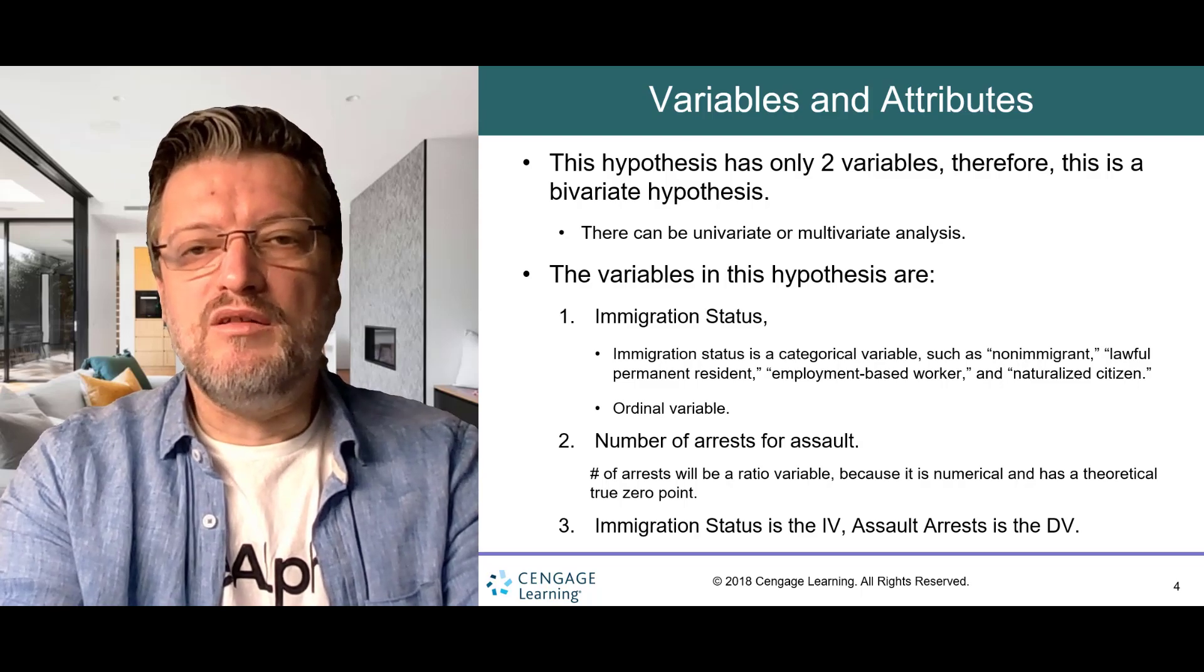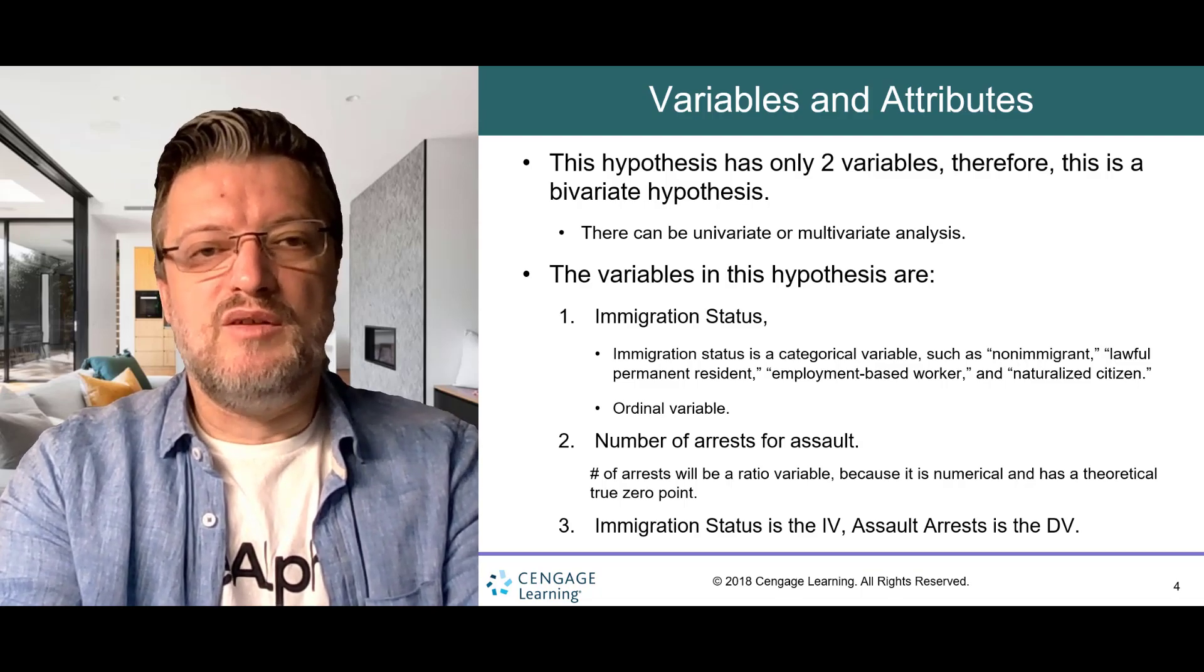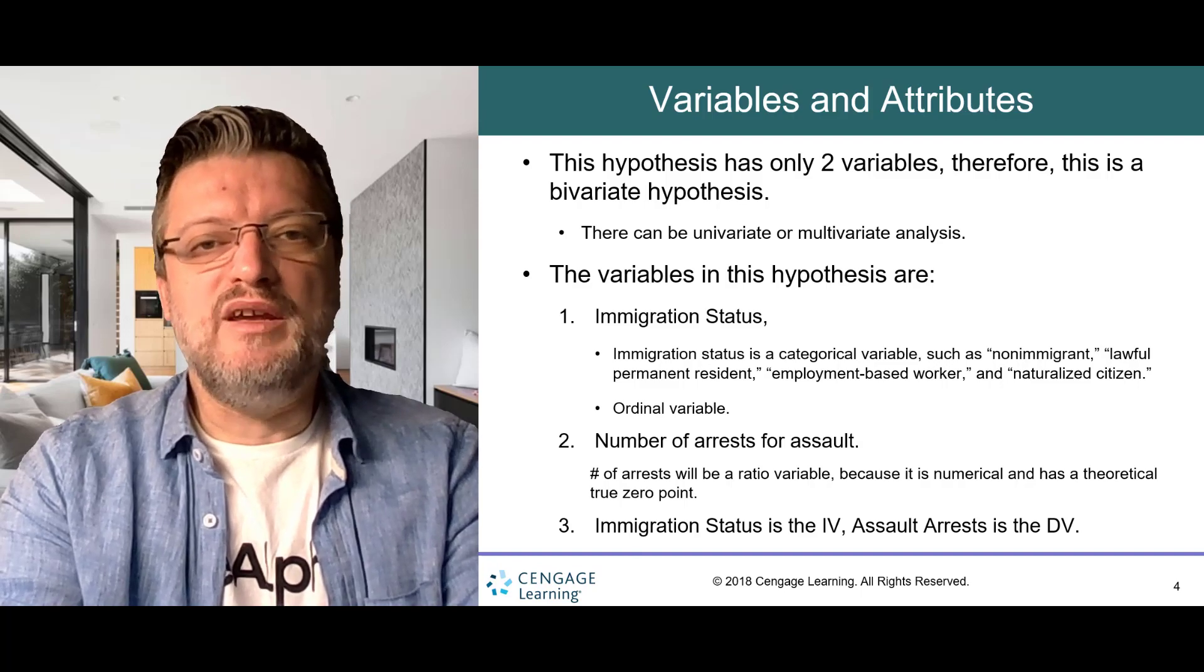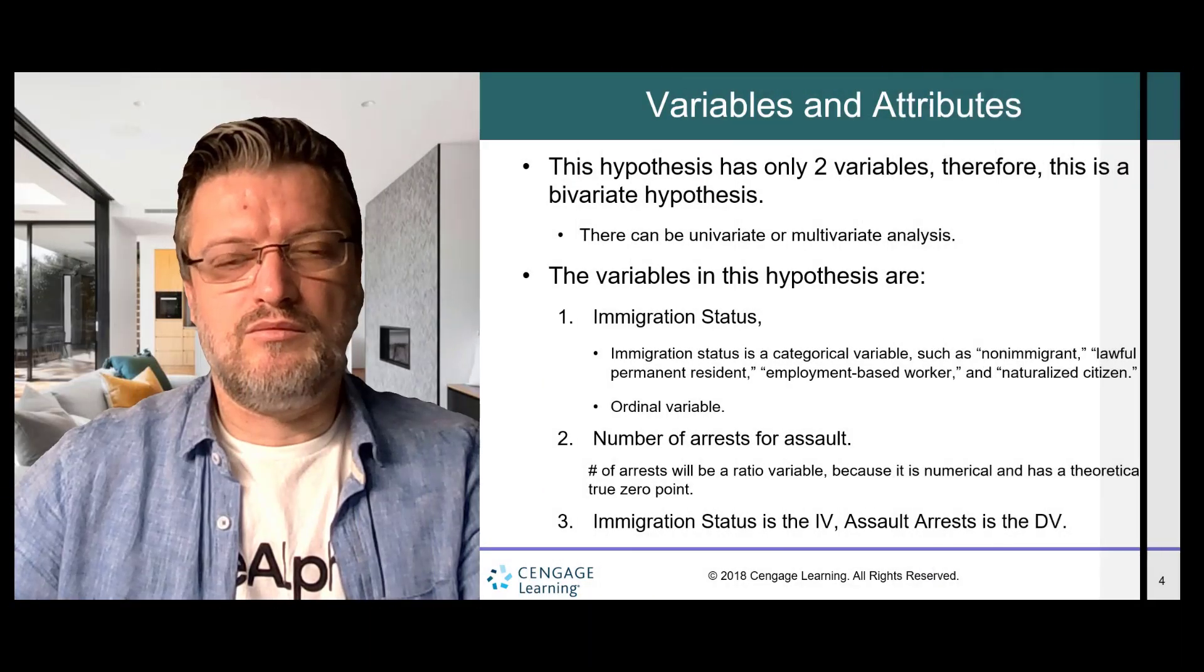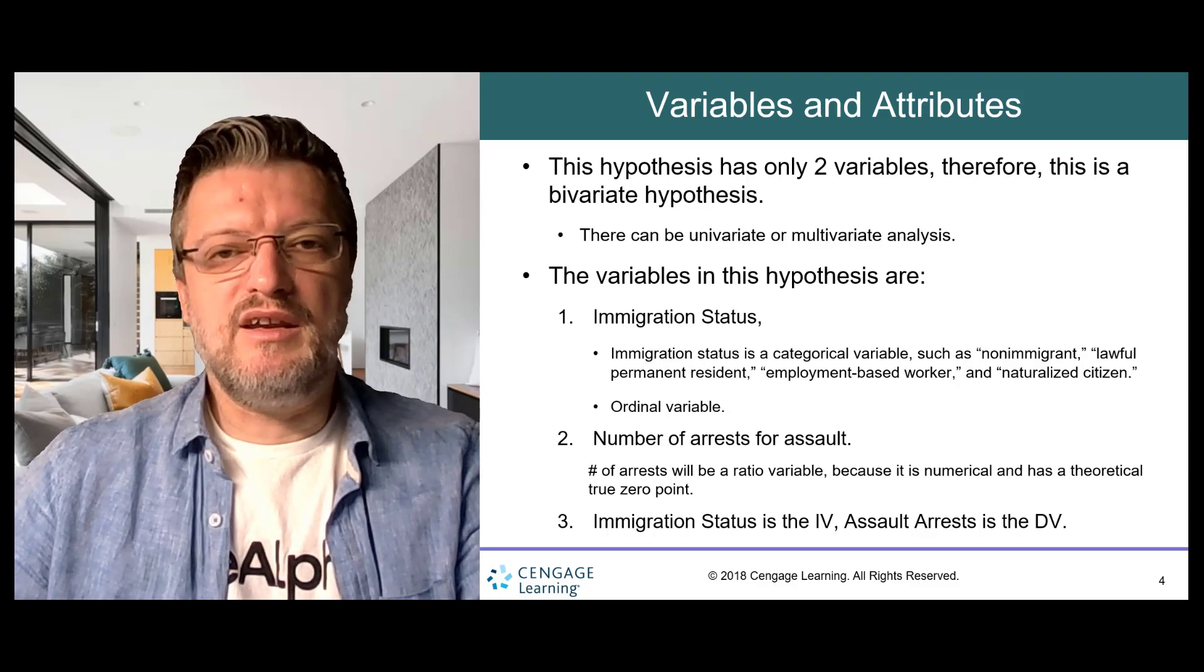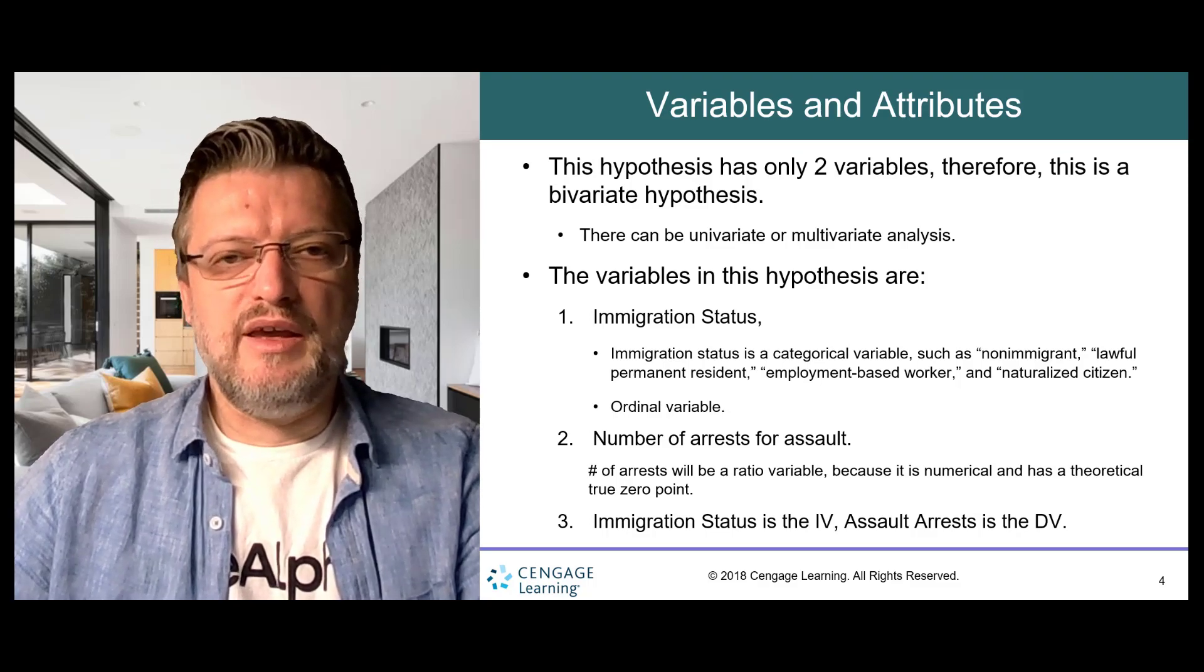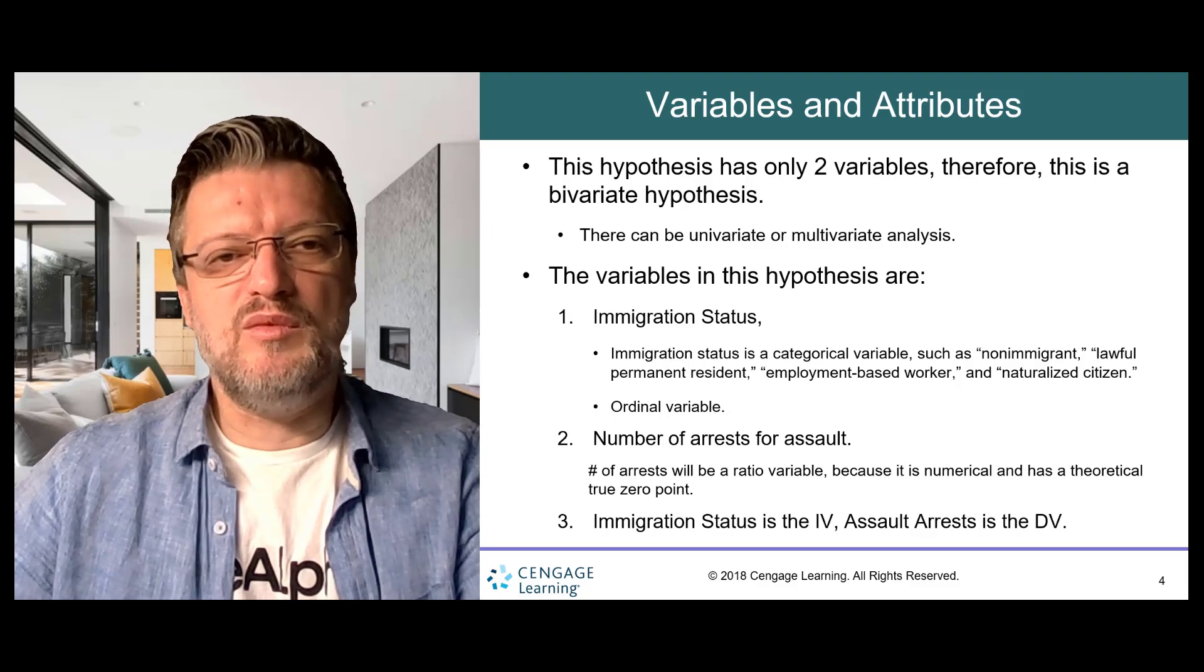More specifically, this is an ordinal variable where the attributes are not only different but also ranked, where categories represent higher ranks. US citizen is higher than LPR. The second variable is the number of arrests for assault and will be a ratio variable because it is numerical and has a theoretical true zero point. Although we talk about relationship between two concepts or variables, in this case, technically, we are testing the difference in the number of arrests between each of the categories of immigration status. As you can probably imagine, the categorical variable, immigration status, is most often than not the predictor or the independent variable, and the number of arrests for assault is the outcome or the dependent variable.